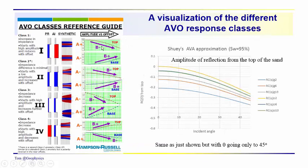This is another visualization of the different classes of amplitude anomalies from the CGG site and Hampson-Russell. Class two impedance difference is minimal, so we're kind of looking over here. We don't really see much of a reflection, but it starts with low amplitude, but then the negative amplitude in this case increases with offset.